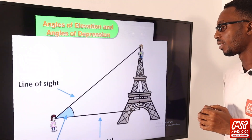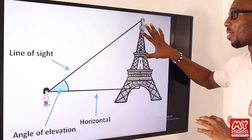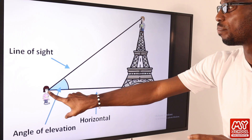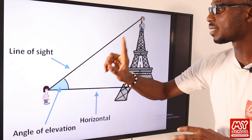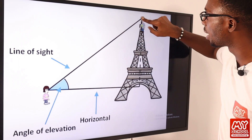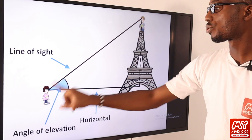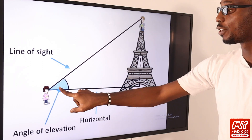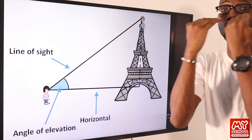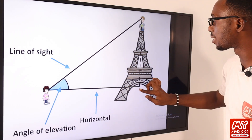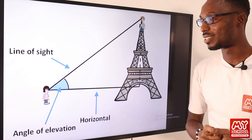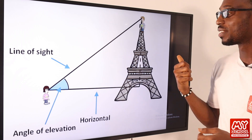We have another scenario here. We can see someone in a very popular tower. The angle of elevation is formed between the line of sight — this person looking upwards — and the horizontal line, which is formed when the person is looking straight ahead. Then we have the perpendicular height from the floor up to the object. That is how we form the angle of elevation.